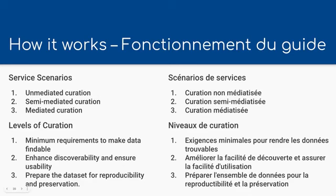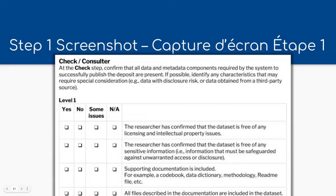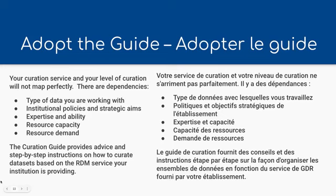This screenshot shows one of the pages of our document — for many people who have seen the CURATED model, it does look familiar in some respects. When you crack it open, you'll begin to see where the levels begin to play vis-à-vis the steps — check, understand, and so on. You'd also find different reference guides that make this very printable into one or two-page documents to adapt and use at your local institution. Your curation service and your levels of curation are local things — what we are proposing and recommending won't map perfectly, and we know that. But we are promoting practices that can be adapted locally per these situations. We intentionally kept the French in the slides to remind people of the language challenges we do face.